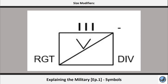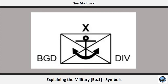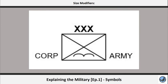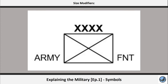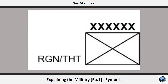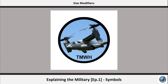A regiment is three lines, abbreviation RGT. A brigade is one X, abbreviation BGD. A division is two X's, abbreviation DIV. A corps is three X's, abbreviation CRP. An army is four X's, abbreviation ARM. An army group or a front are five X's, abbreviation AGP or FNT. A region or a theatre are six X's, abbreviation RGN or THT. Keep in mind that these abbreviations are the ones that we use, and other channels may use different ones.